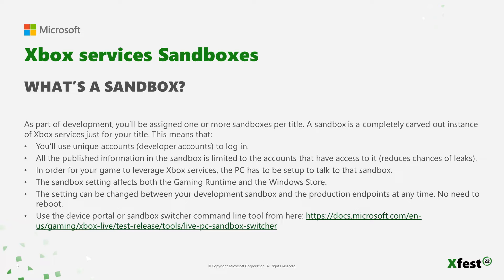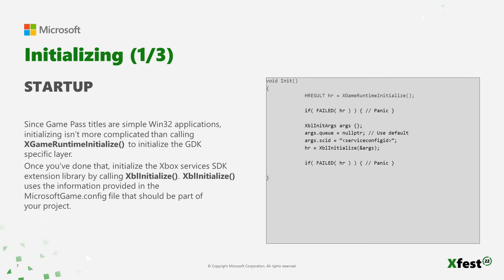Initializing. Since Game Pass titles are simple Win32 applications, initializing isn't more complicated than calling xGameRuntimeInitialize to initialize the GDK specific layer. The additional library will just give you access to unique functionality. xGameRuntimeInitialize will only fail if the game runtime is not initialized or if it's not running properly. The gaming runtime will be installed, if not installed already, when the game is installed or when you install the SDK.